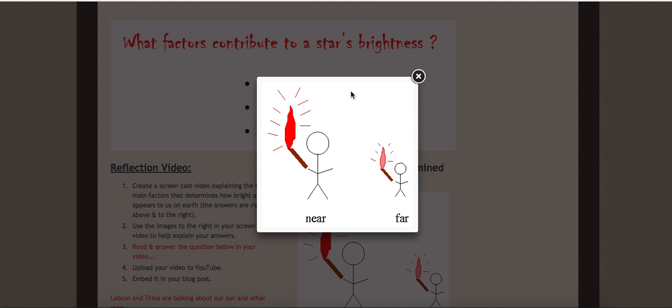It would also look a lot bigger when it's near. As you can see right here, it's pretty small in terms of the person, and right here it's pretty close to you, so it is bigger and more bright.